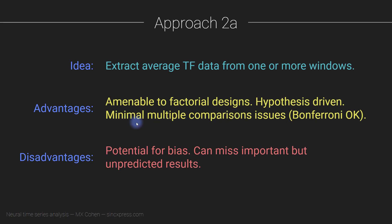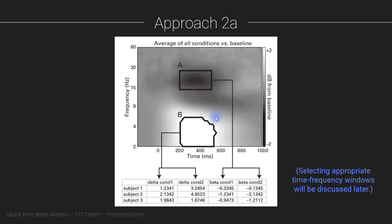Therefore, Approach 2A also has minimal multiple comparisons issues. For example, if we are only running tests in two windows of interest, we can actually use Bonferroni correction — no need for cluster correction or permutation testing. At a nominal p-value of 0.05, the effective corrected p-value would be 0.025, because you're correcting for two comparisons. For this reason, Approach 2 has increased sensitivity for detecting potentially subtle effects, because you don't have to correct for every single time-frequency pixel or every electrode.